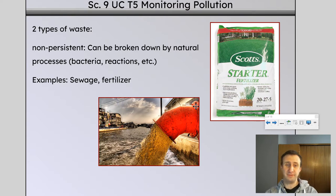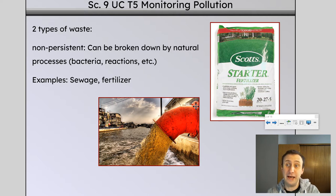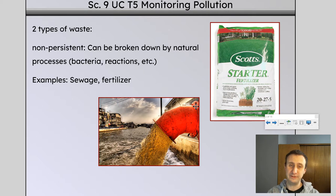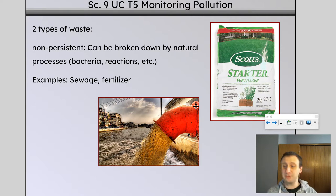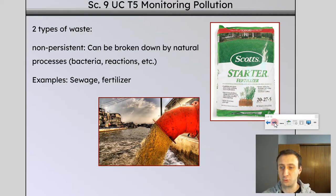Examples of non-persistent waste are sewage or fertilizer — bacteria loves to eat away at that and break it down into simpler, smaller pieces that aren't as harmful for the environment. But the actual making of that bacteria and algae has big consequences, as we're going to learn later on.